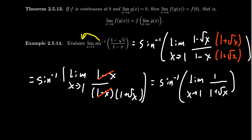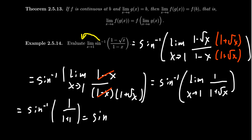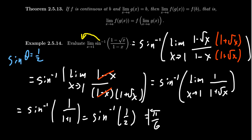We've removed the discontinuity — plugging in x equals one no longer gives division by zero. So we get sine inverse of one over one plus one, that is sine inverse of one half. Since sine inverse is the inverse of sine, we're looking for the angle theta such that sine equals one half in the first or fourth quadrant, which in the first quadrant is pi over six, or 30 degrees.